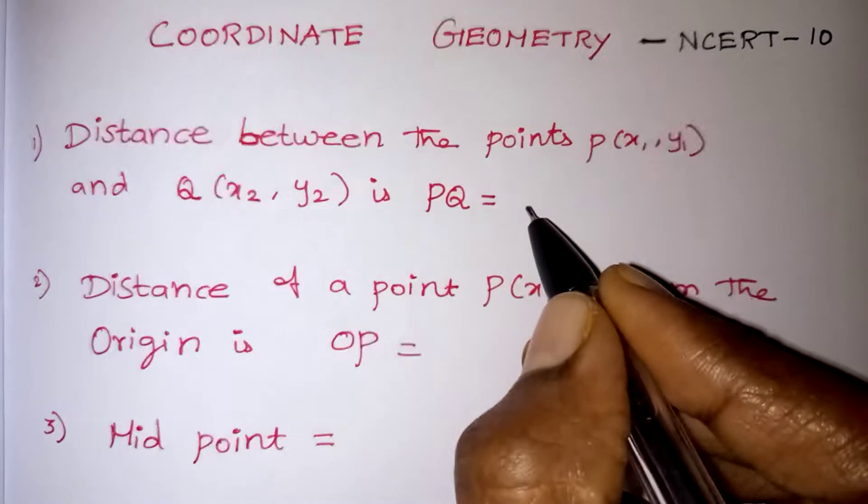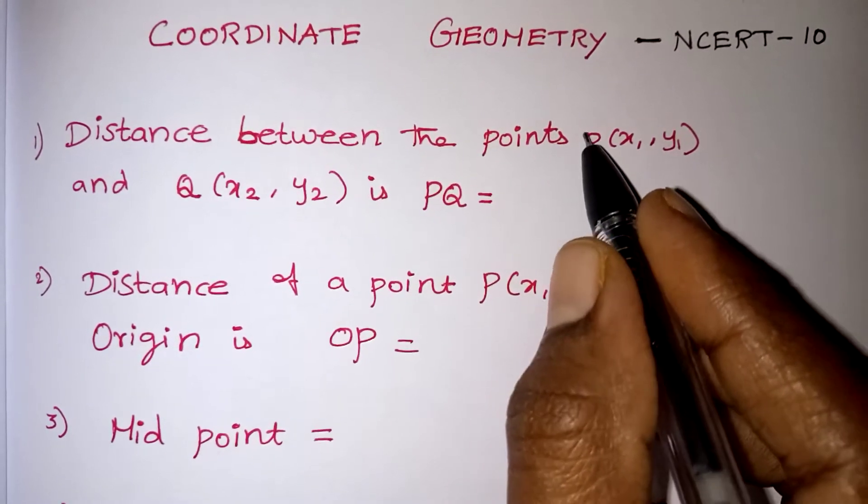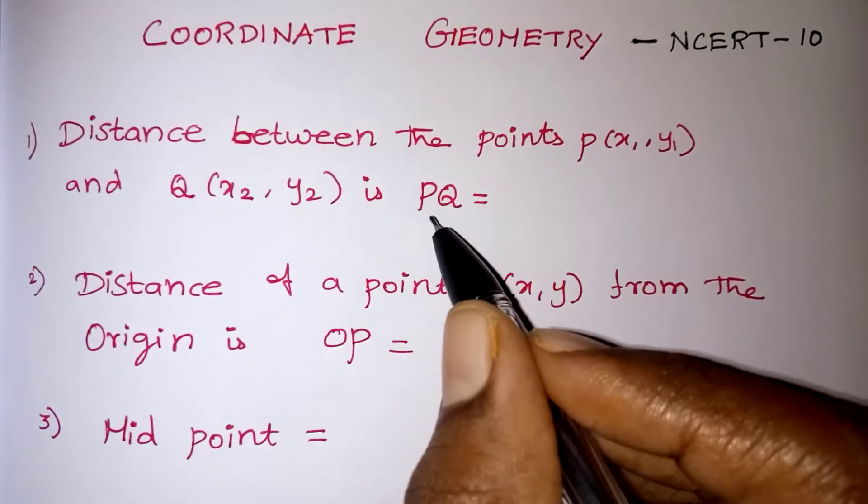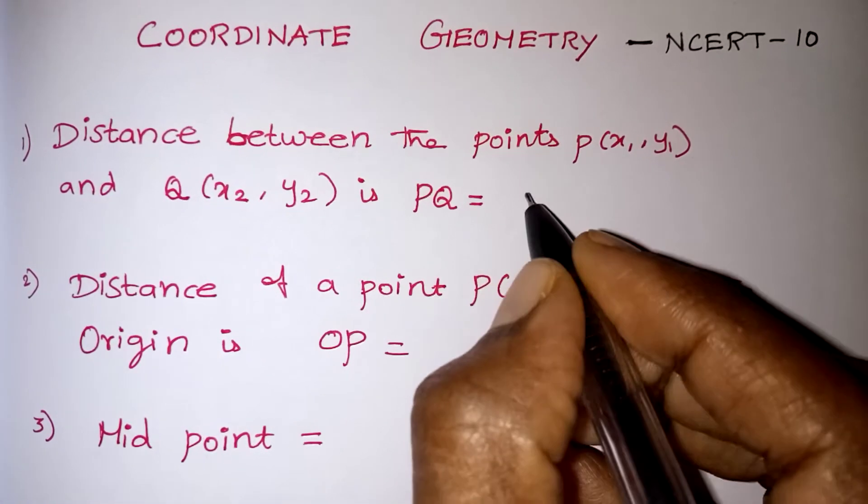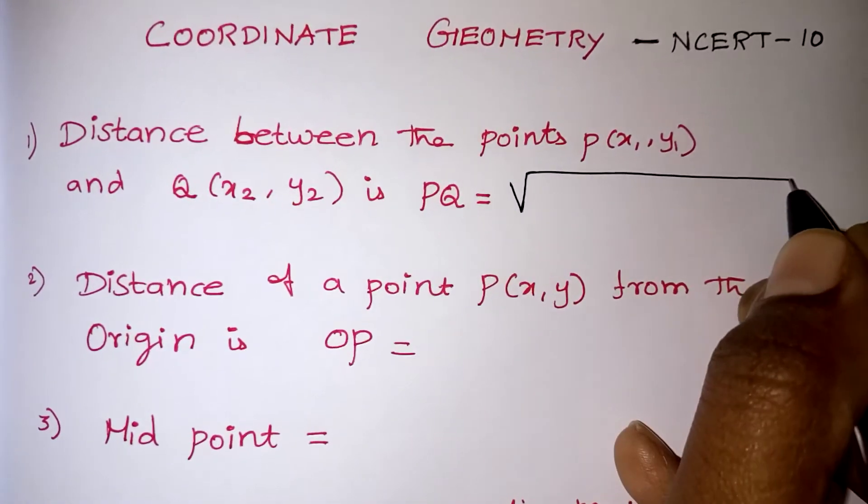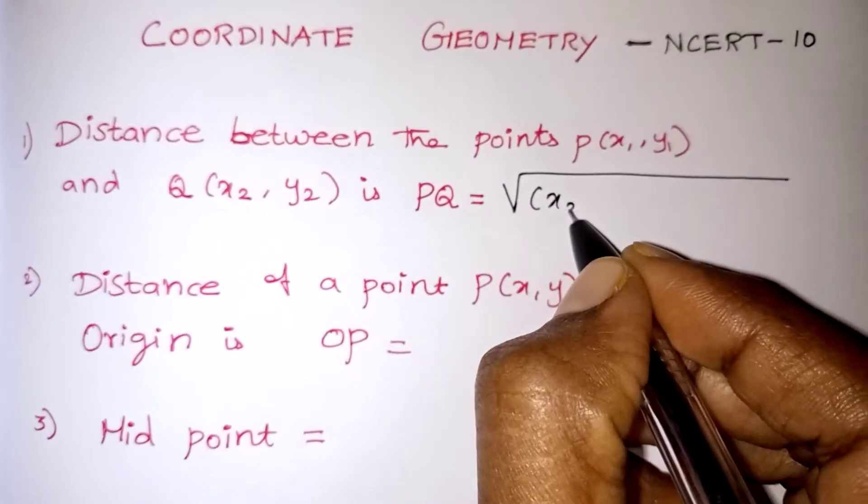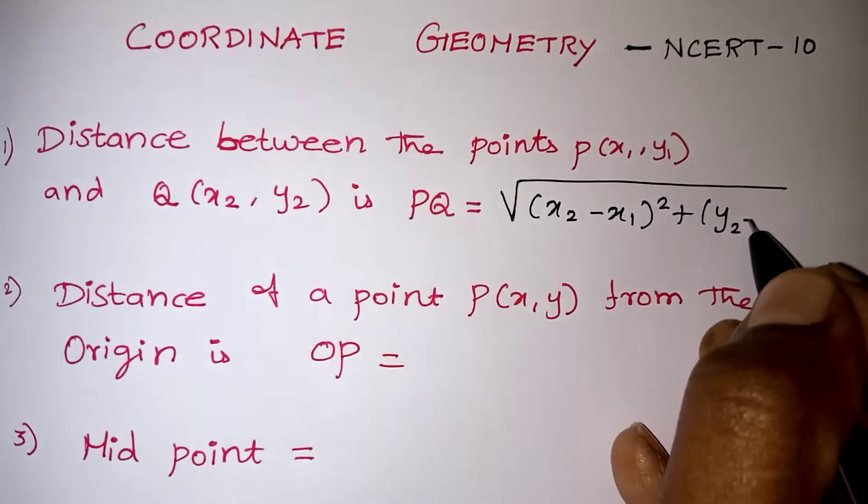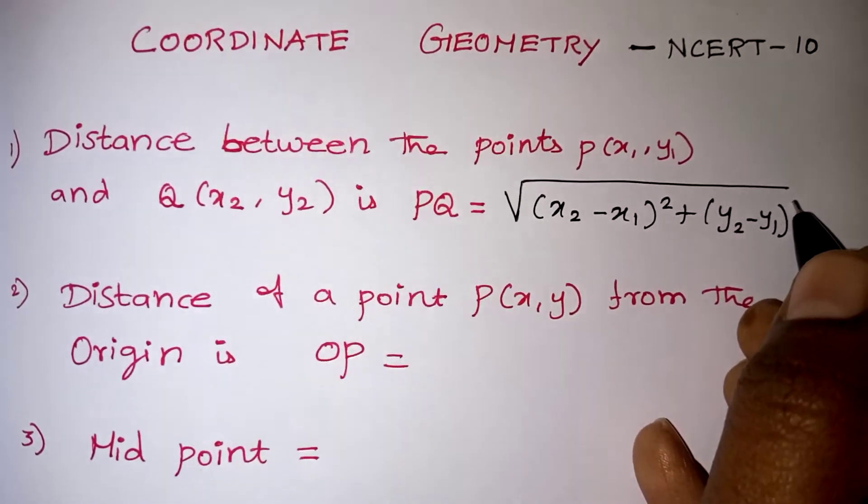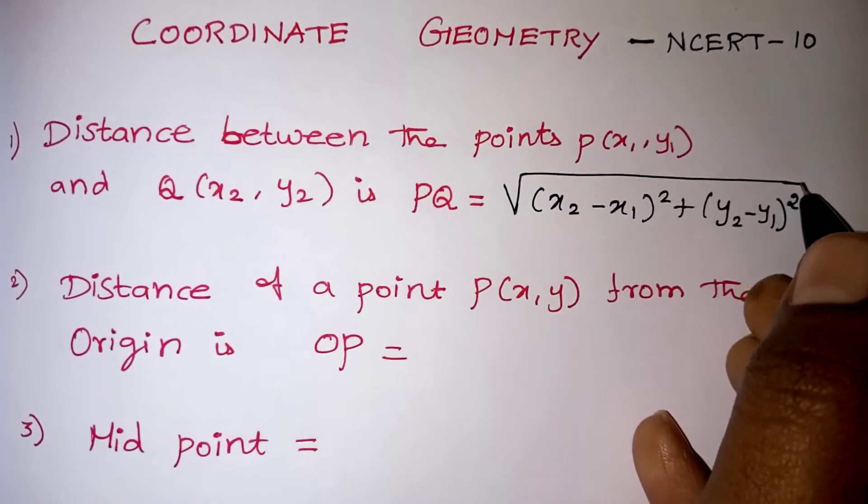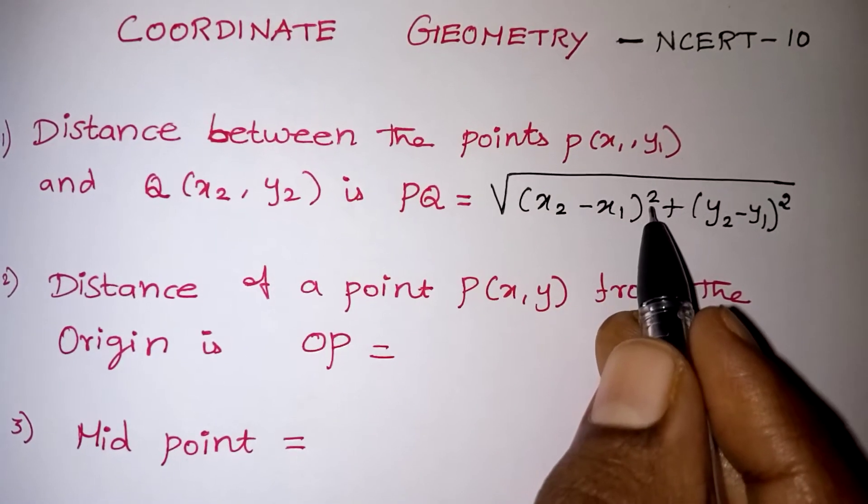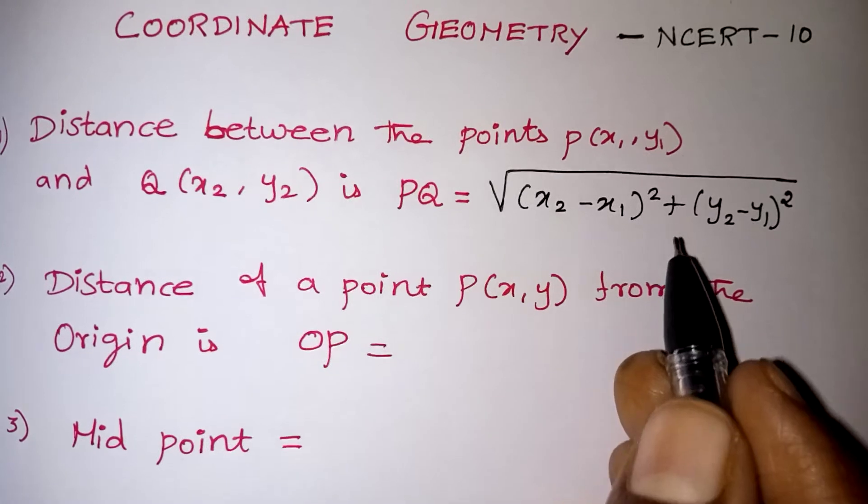Then the distance will be, the point is mentioned as P, this point is mentioned as Q, the distance will be PQ. The distance between P and Q is PQ. Formula, root of x2 minus x1 the whole square plus y2 minus y1 the whole square. This is the formula for finding the distance. You can write x1 minus x2 also because when we are squaring that minus will become plus.